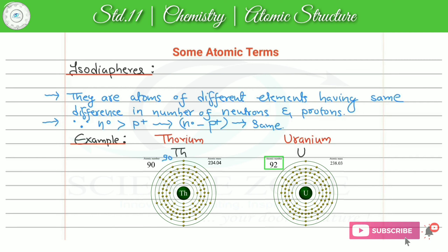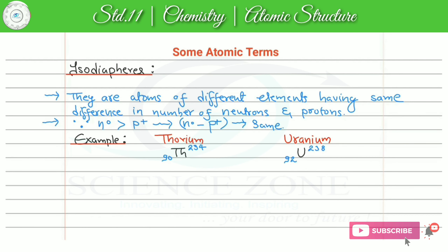Thorium का atomic number 90 है, and for uranium it is 92. Atomic mass of thorium is 234 and for uranium it is 238. Now atomic number सबके में express कर देता हूं। Sub-atomic particles में atomic number, यानि number of protons के अगर बात करें, तो thorium में 90 हैं and uranium में 92. Atomic mass के अगर हम बात करें, thorium के case में 234 है and for uranium it is 238.